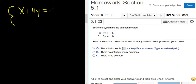So we have x plus 4y equals negative 5, and 5x plus 3y equals negative 8.